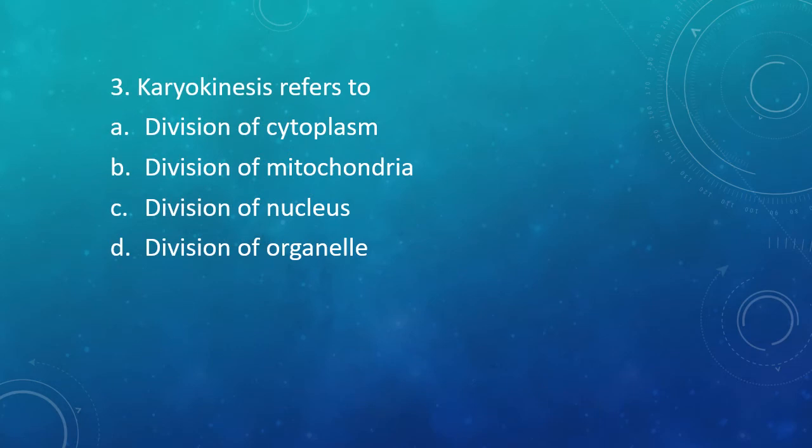Question 3: Karyokinesis refers to — Option A: Division of cytoplasm. Option B: Division of mitochondria. Option C: Division of nucleus. Option D: Division of organelles. The correct answer is Option C, that is division of nucleus.